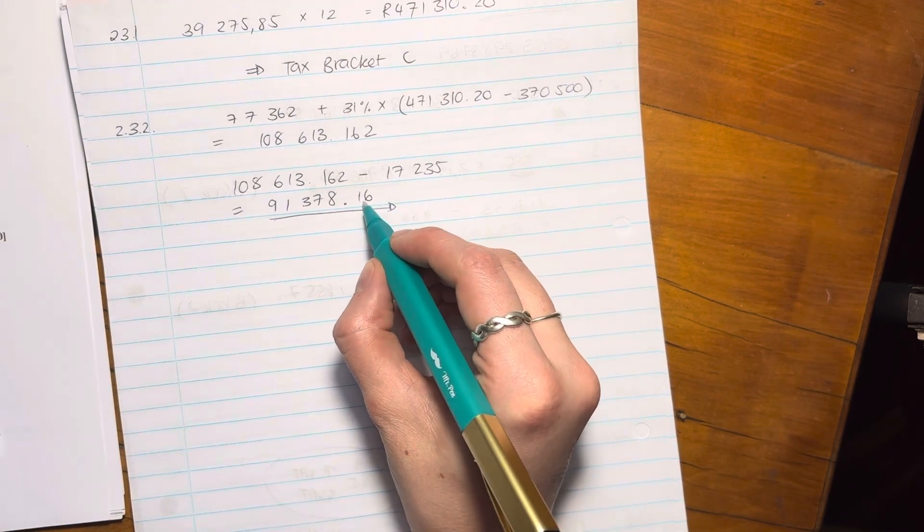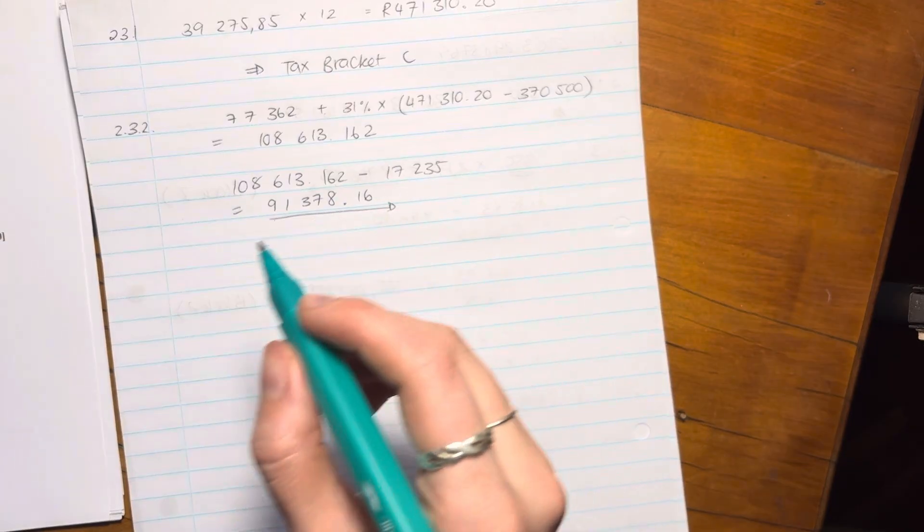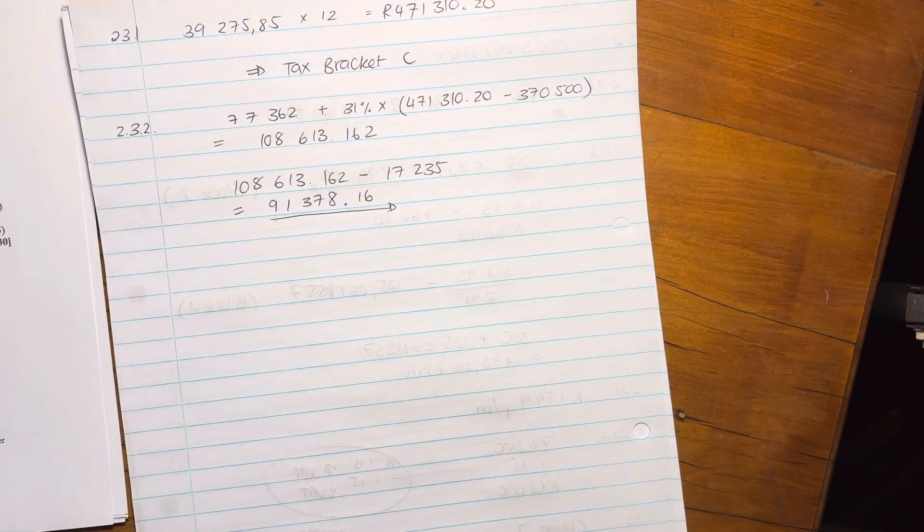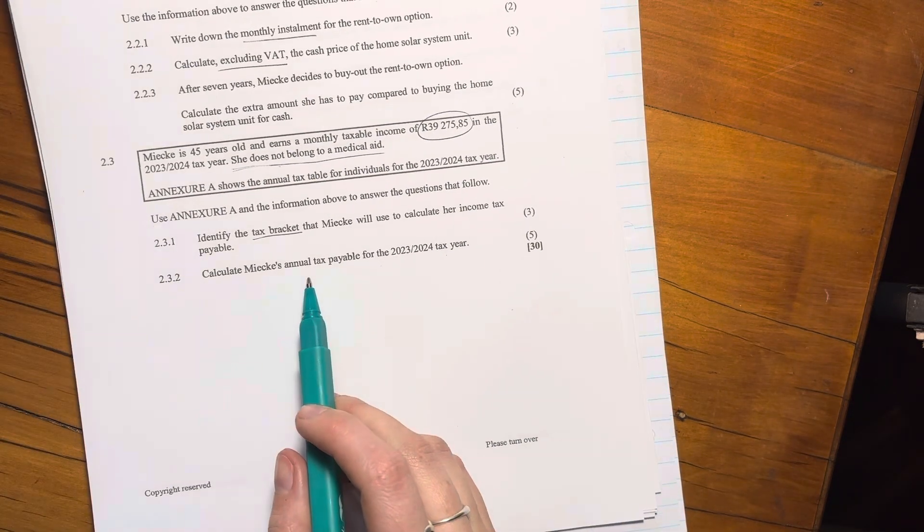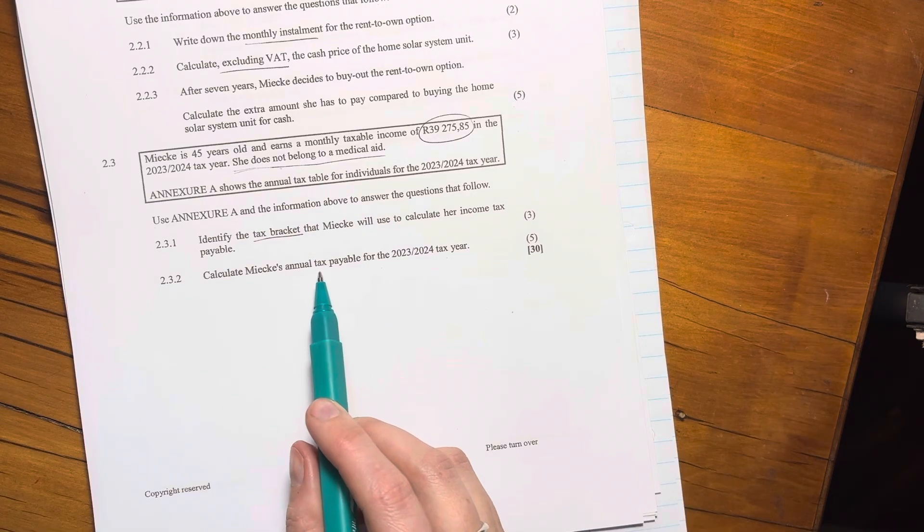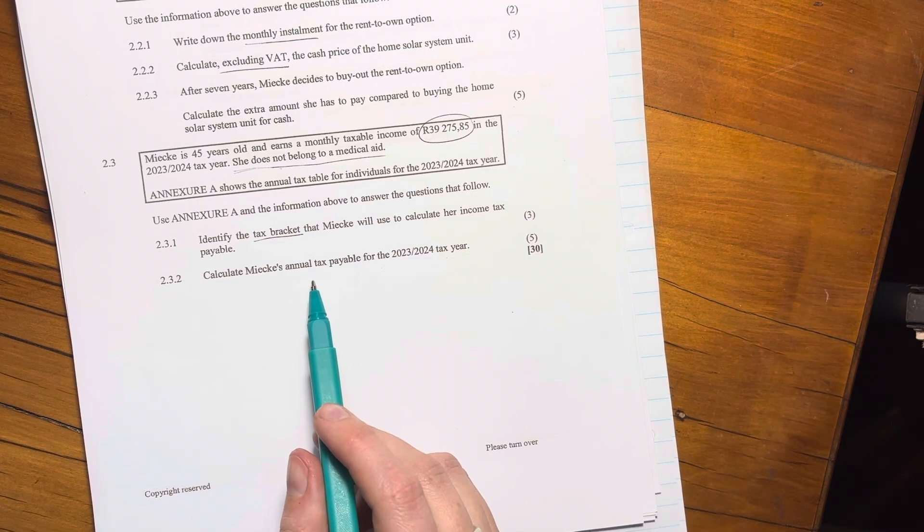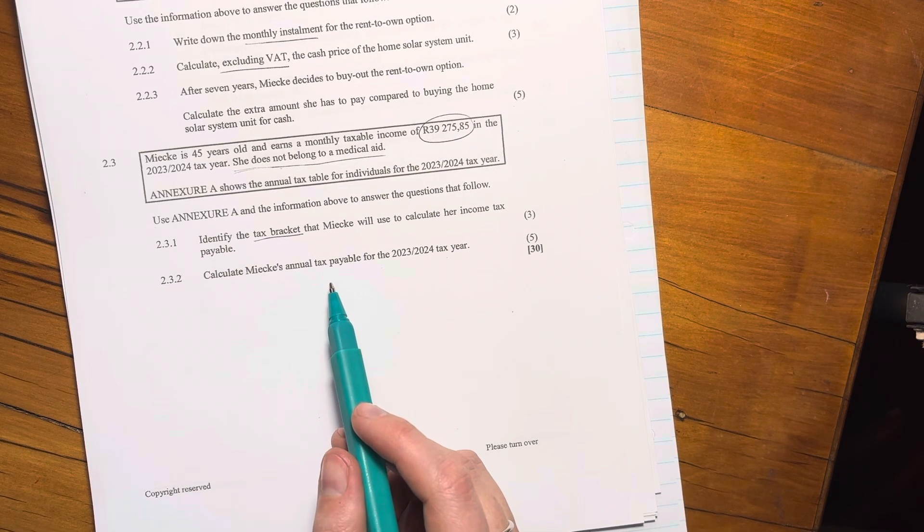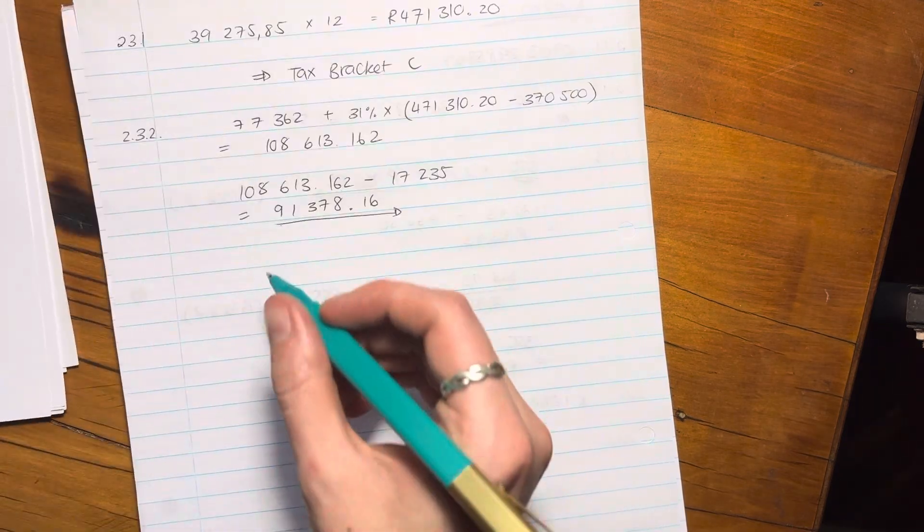Right. Why did I round off 1.6? Because remember, it's a rand amount. We don't keep that 2 in. So that's an important thing to note. It asks for the annual amount. So we don't have to change anything there. We don't have to divide it by 12. Sometimes questions do ask for monthly. So just read carefully.